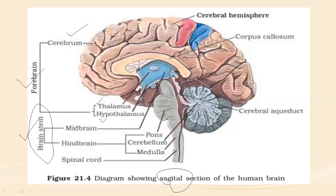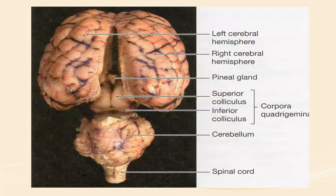The midbrain is located between the thalamus and hypothalamus of the forebrain, and you can see the pons region of the hindbrain. The dorsal portion of the midbrain consists mainly of four rounded lobes, which can be beautifully visualized as the corpora quadrigemina — controlling visual and auditory reflexes.